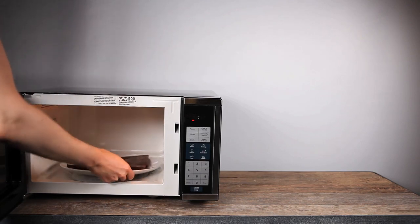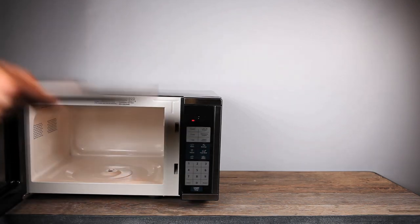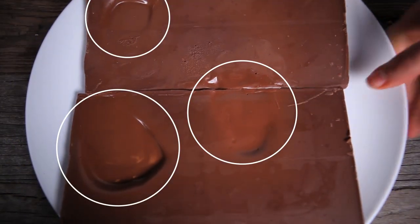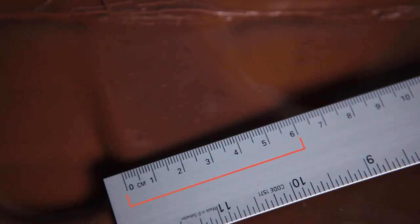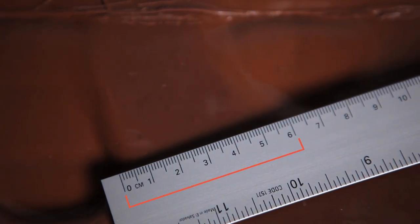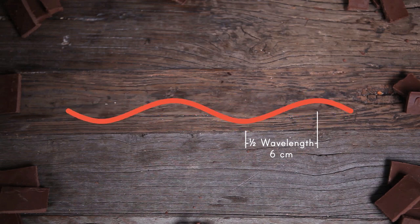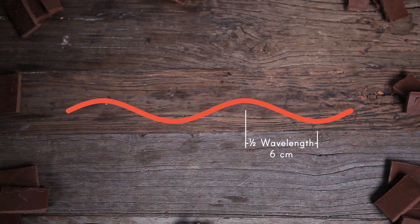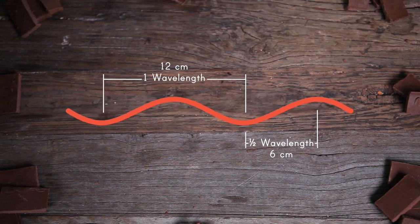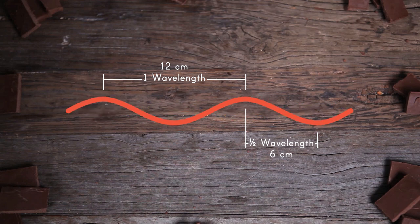When the chocolate is slightly melted, take the plate out of the microwave. See those spots? Grab a metric ruler and measure the distance between them in centimeters. That's half the wavelength of the microwaves that the oven produces. Double that distance and you'll have the full wavelength of the waves emitted by the microwave.